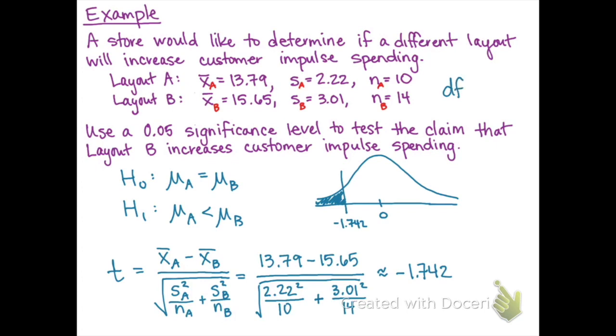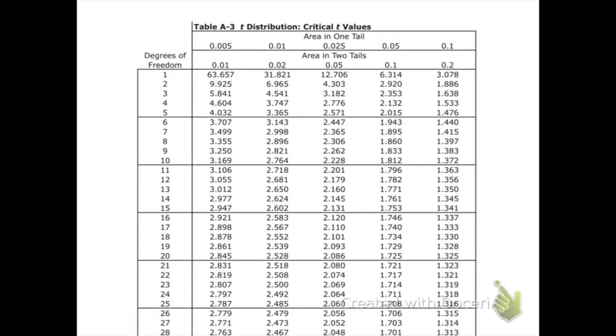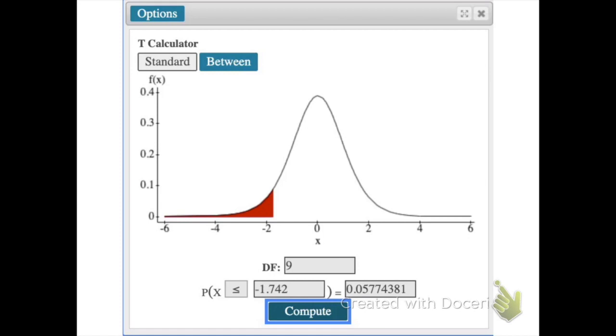Remember that for the degrees of freedom, we need to take the smaller sample size and subtract 1. So in this case, we would use the sample size of 10 and we would have 9 degrees of freedom. On the t-table, we look at 9 degrees of freedom and find the number that's closest to 1.742, our test statistic, the positive version of our test statistic, and that number would be the 1.833 on our table. But the p-value is going to be the area in one tail there, which would be 0.05. If we use StatCrunch to find our p-value, we can get more accurate and our p-value comes out to be approximately 0.058.